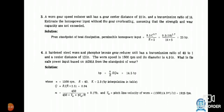A standard steel and phosphor bronze gear reducer unit has a transmission ratio 40 to 1 and center distance 12 inches. The worm speed is 1500 rpm and diameter is 4.9 inches. What is the safe power input based on AGMA standard?